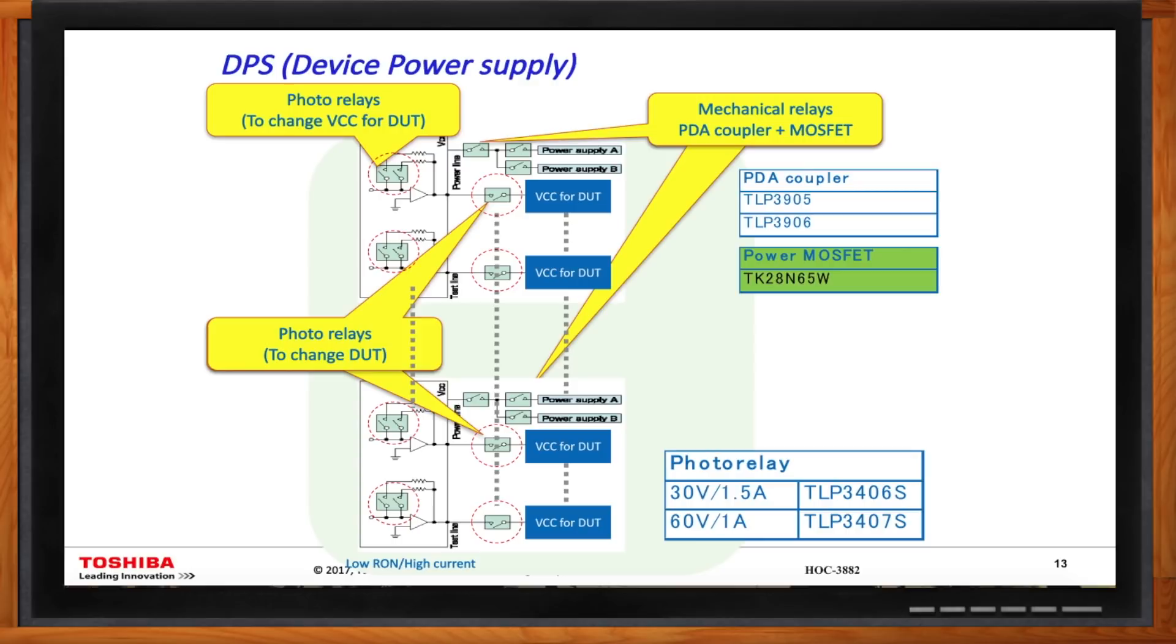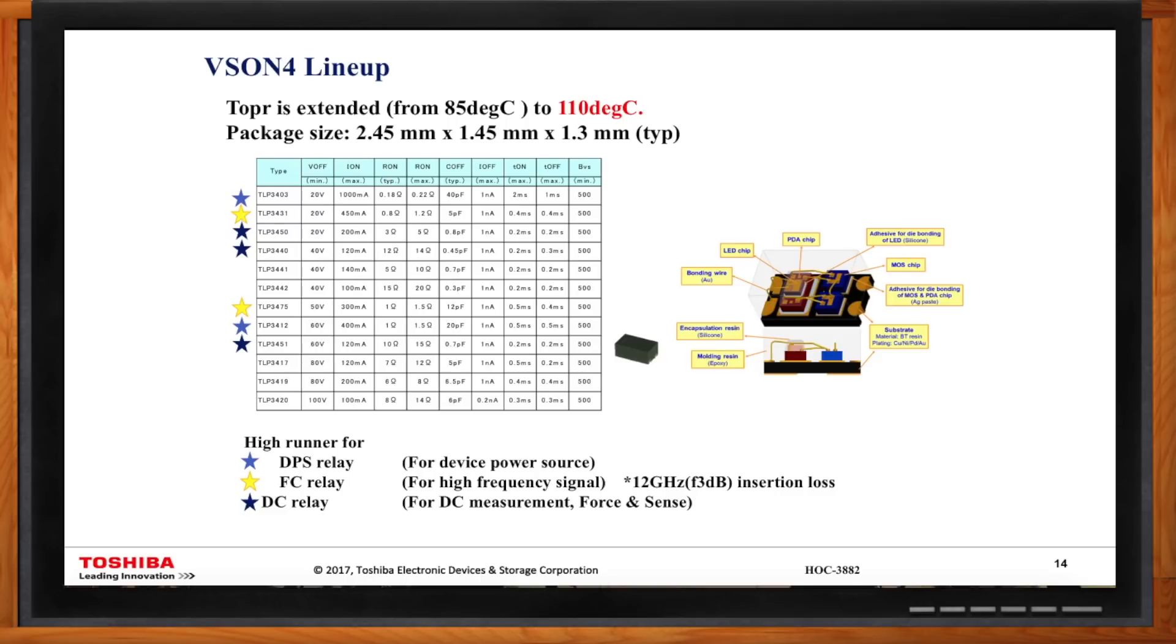Okay, Joseph. Say I'm designing my new piece of test equipment. Then you'll be glad to hear I'm going to need a lot of photorelays. What have you got for me? Yeah, I love hearing that. And we have a lot to offer. And the next three slides basically show you various family that we can offer you. The first one is what we call VSON4 lineup. The package is extremely small. You're looking at 2.45 by 1.45, and the thickness is only 1.3 millimeter. This is a very small package solution.